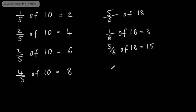So, let's go ahead and find 7 ninths of 18. 18 divided by 9 is going to give me 2. 7 times by 2 is going to give me 14.